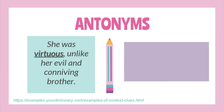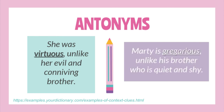'Be careful driving when the road is wet and hazardous — it is only safe when it is dry.' The word safe is the opposite of hazardous, which means risky or dangerous. Another example: 'She was virtuous, unlike her evil and conniving brother.' The words evil and conniving are opposite terms of virtuous, which means righteous. And 'Marty is gregarious, unlike his brother who is quiet and shy.' The words quiet and shy are opposite terms of gregarious, which means friendly. The signal word in antonym clues is 'unlike.'